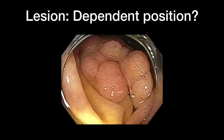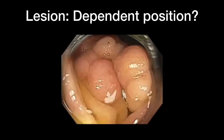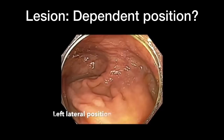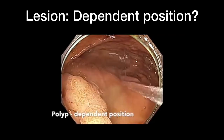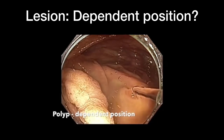Let's focus on bleeding management with special reference to flat lesions. Here is a case — a patient with a large non-polypoidal lesion in the cecum. Once you see this, you want to ask yourself two important questions: Is there cancer? And if not, is the lesion in a dependent position? By flushing water and finding that the lesion is submerged, as you can see in this case, you can easily conclude that the lesion is in a dependent position.